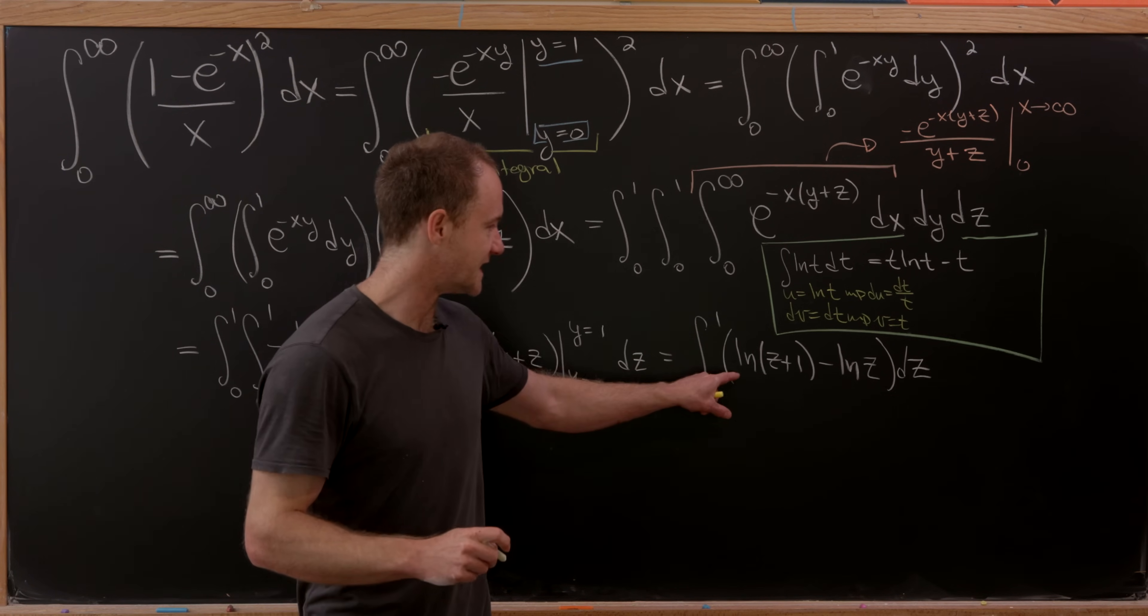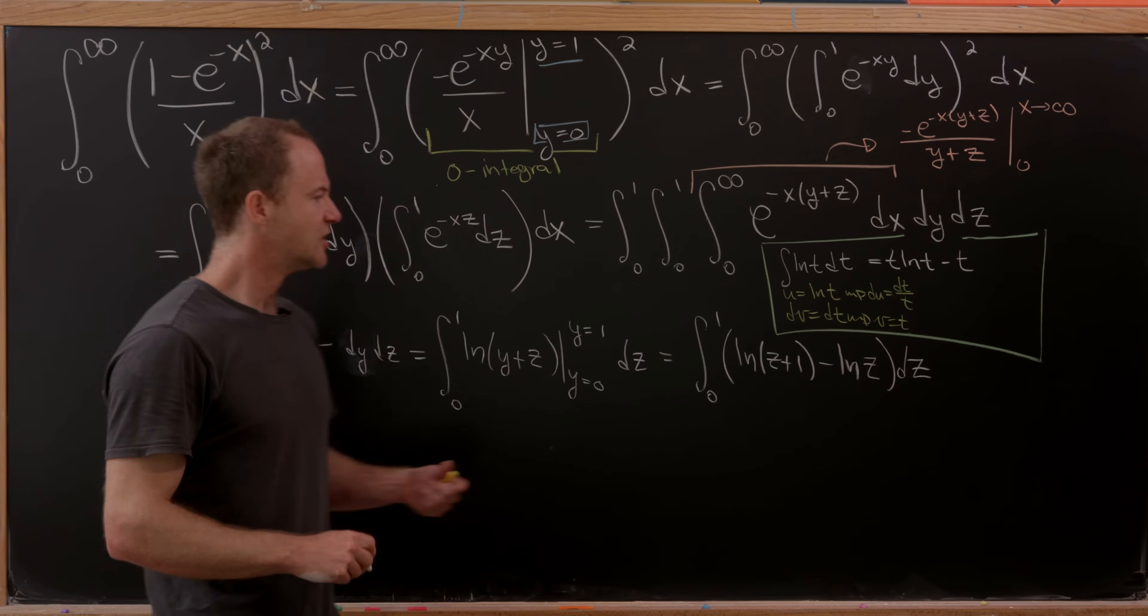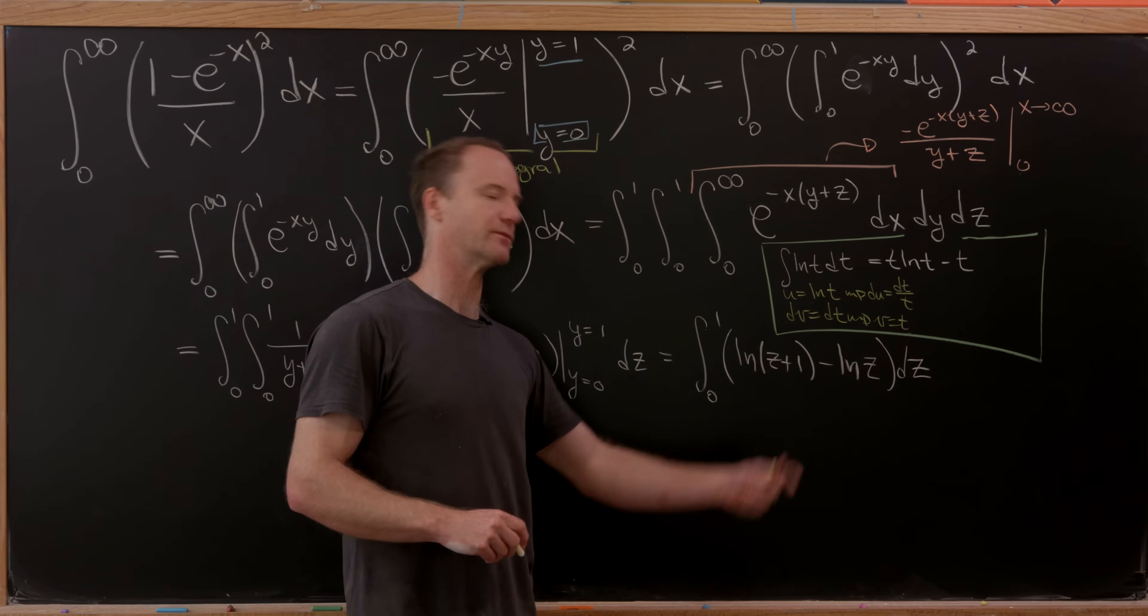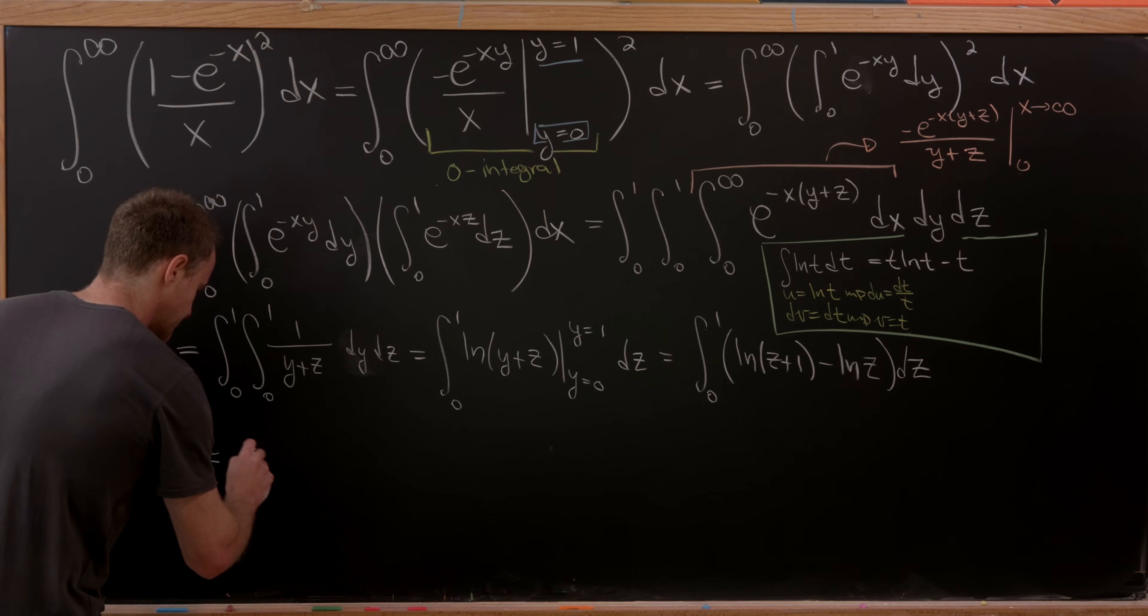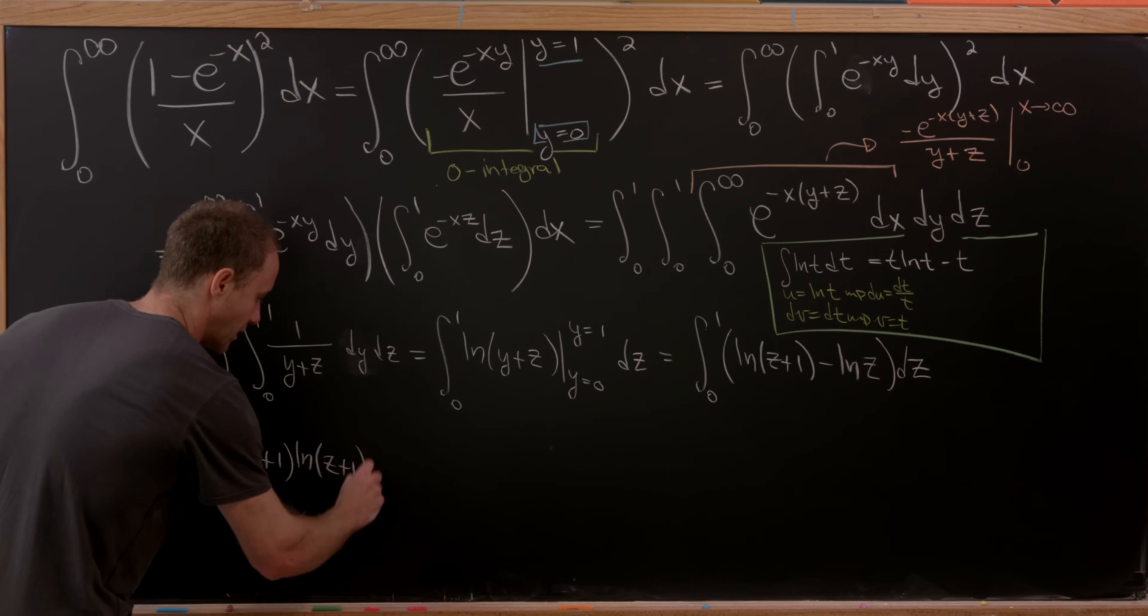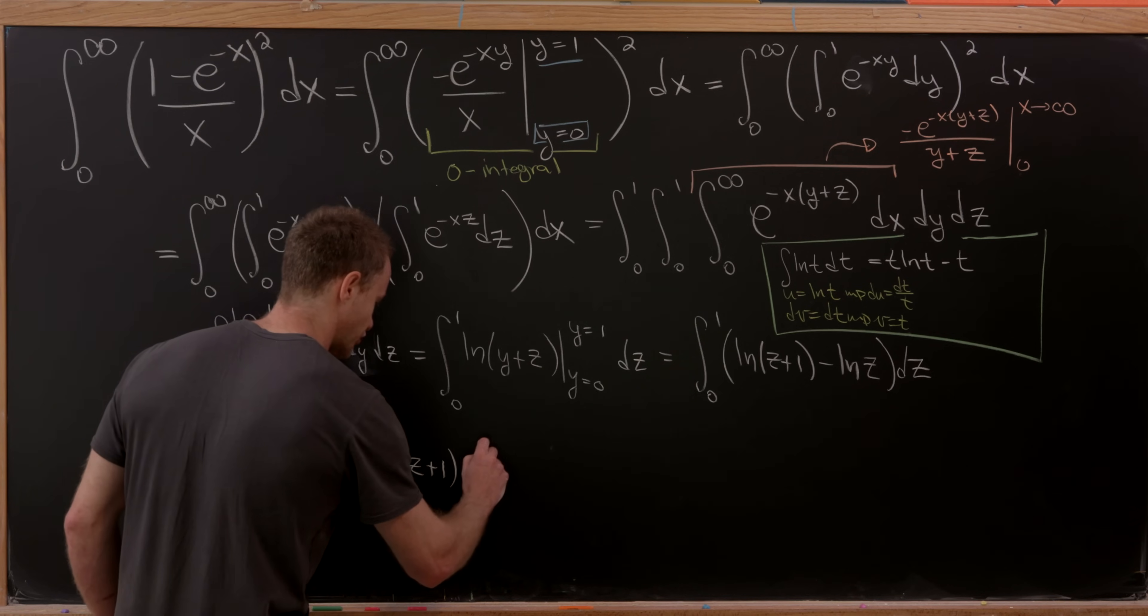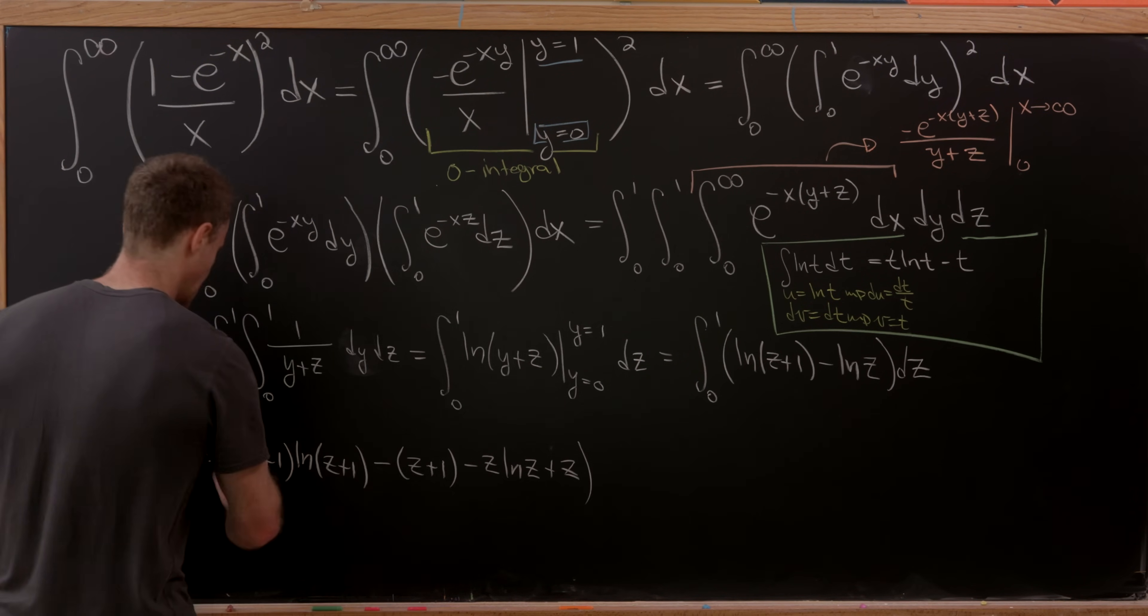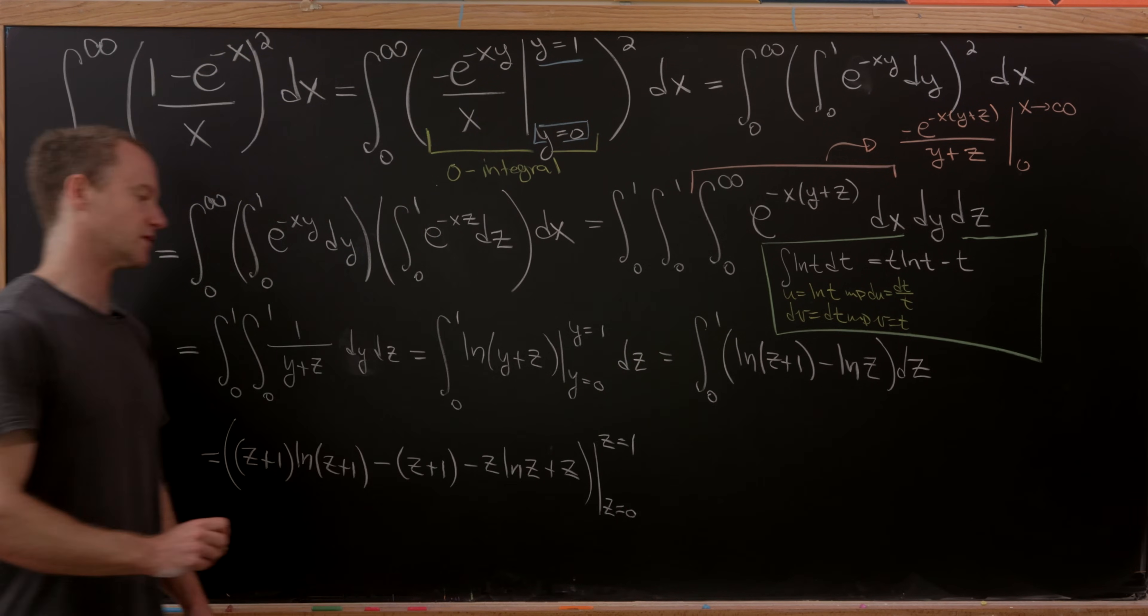So now we can apply that to each of these integrals, here where t is z+1, and here where t is z. Notice we can do that with the substitution t equals z+1, because we've got such a simple substitution happening in there. So let's see what that leaves us with in the end. We'll have (z+1)log(z+1) - (z+1), and then from that, we subtract z log(z) + z. And then we're going to evaluate that from z equals 0 up to z equals 1.